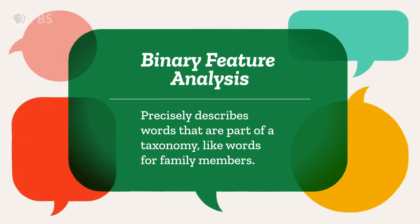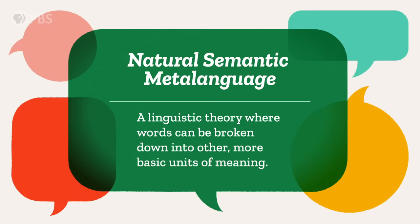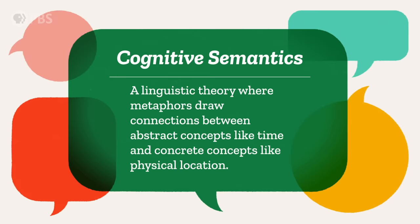That said, like prototype theory, predicate calculus also doesn't work for everything. These methods are just two ways to do semantics. Other approaches to semantics specialize in still more kinds of meanings, such as binary feature analysis, which is useful for precisely describing words that are part of a taxonomy like words for family members. There's natural semantic meta-language, where words can be broken down into other, more basic units of meaning, and cognitive semantics, where metaphors draw connections between abstract concepts like time and concrete concepts like physical location. Some aspects of semantics highlight similarities between different, unrelated languages, while other aspects highlight meanings that are more specific to a particular language or language family. There's so much more to talk about, and we'd love to get into it, but we don't have time.